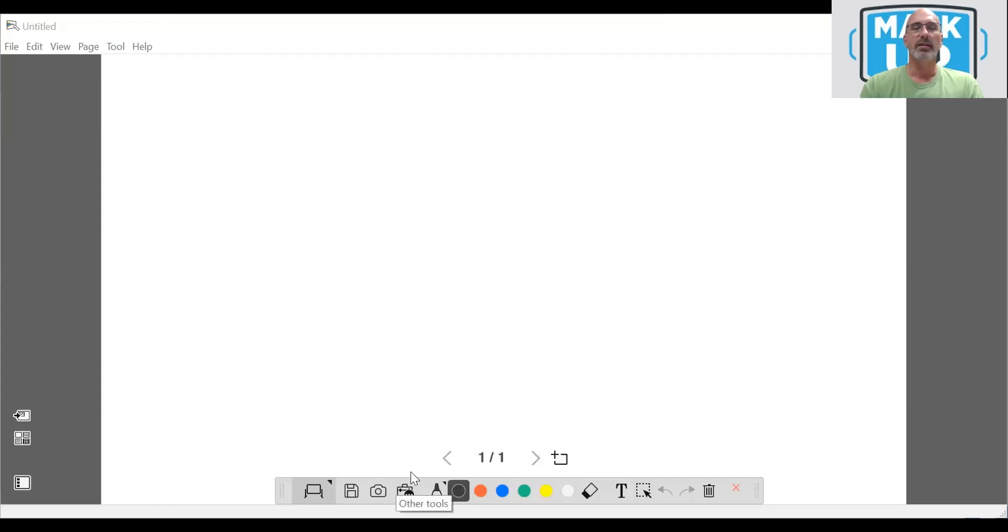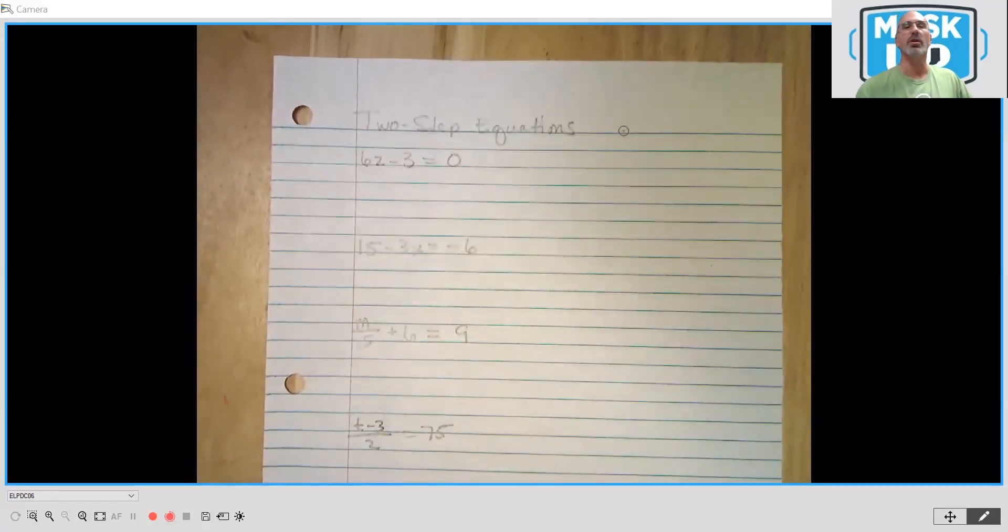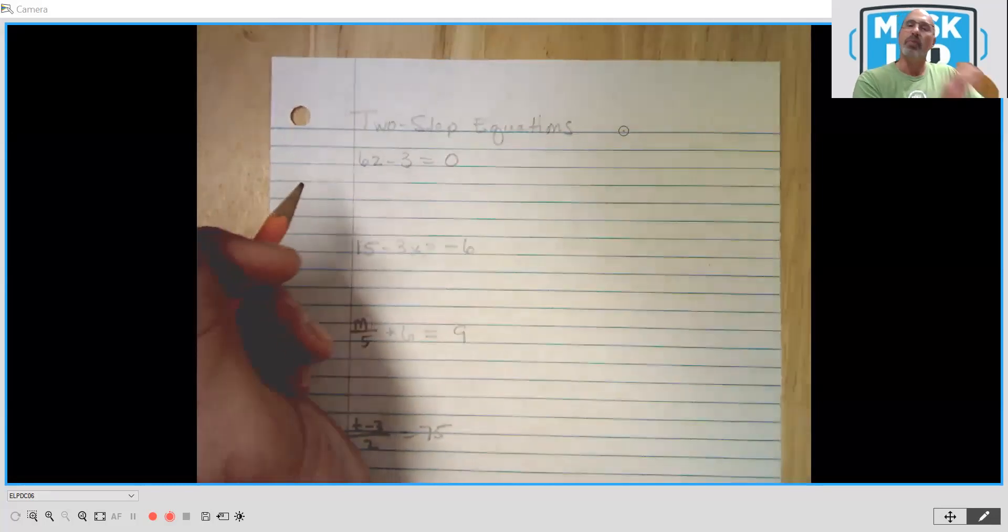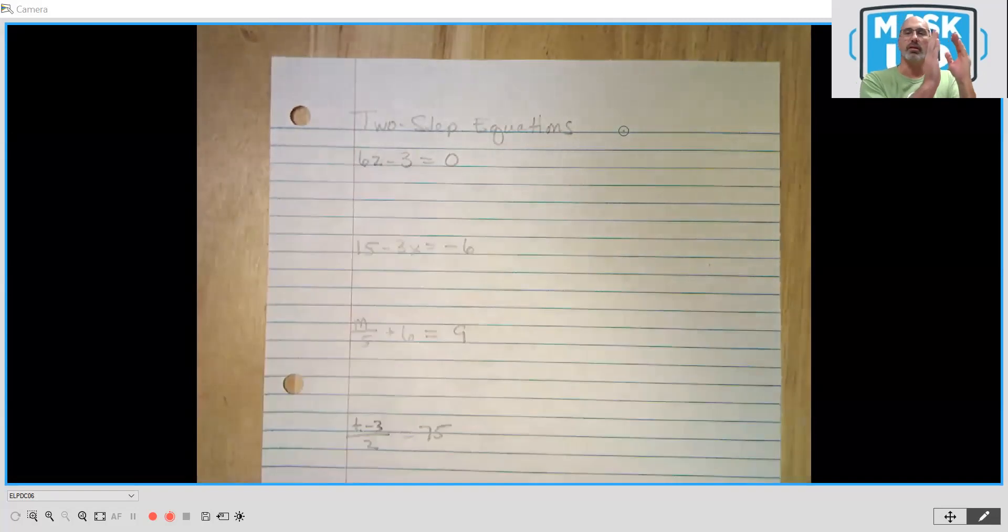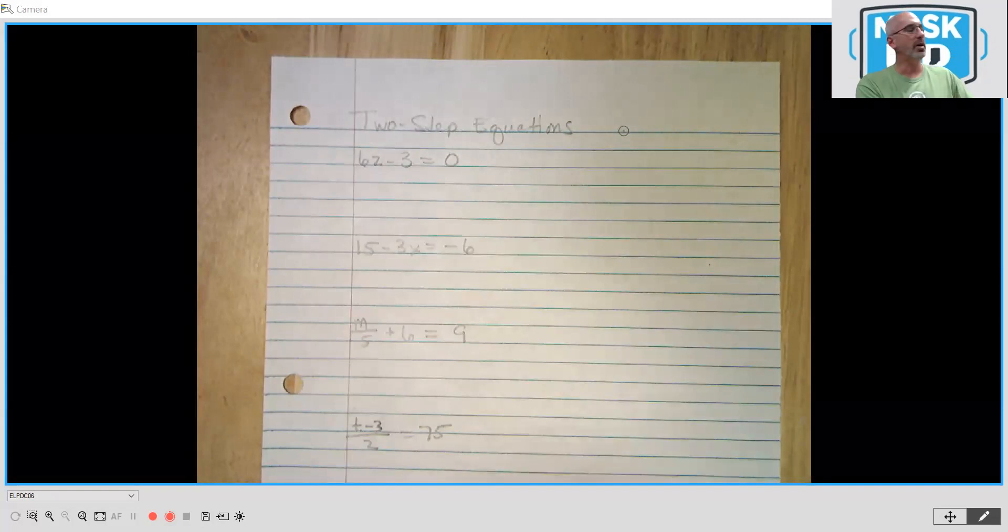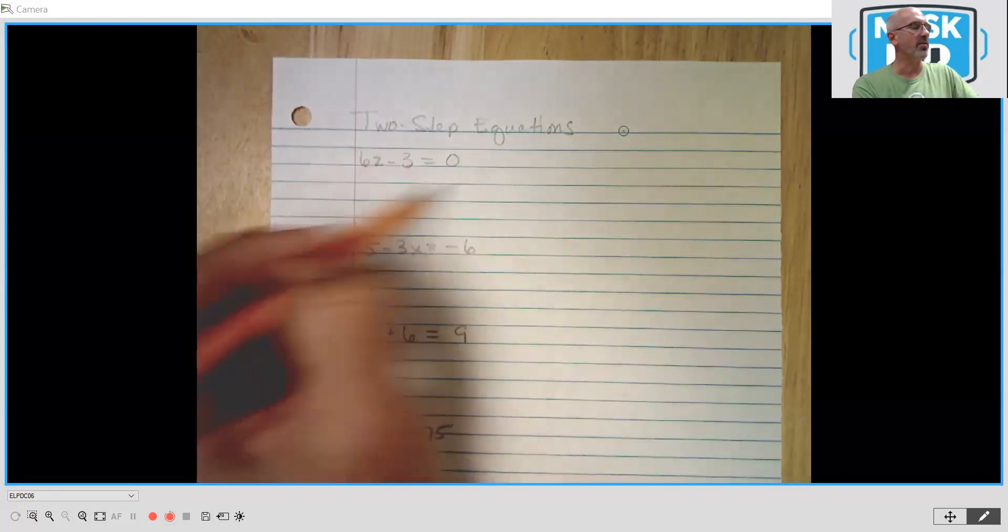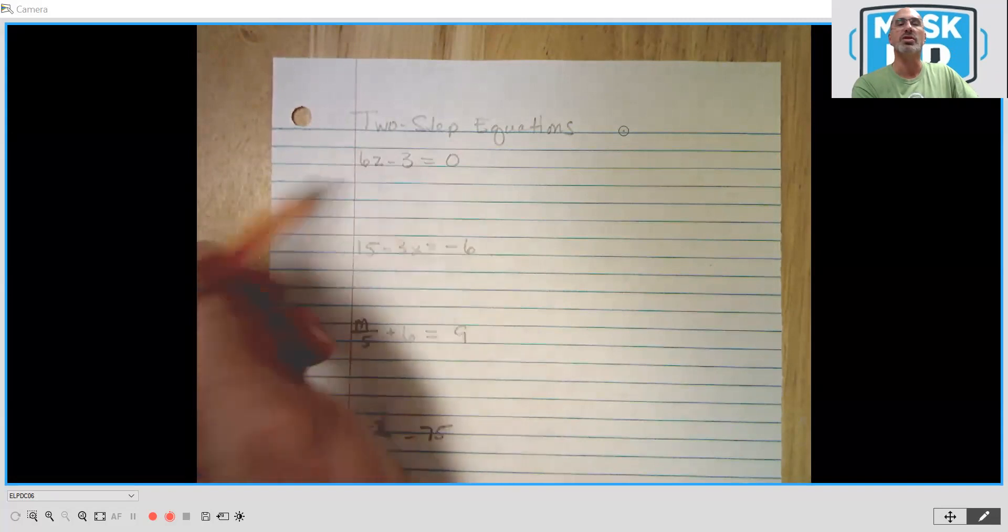So I am going to share my screen with you. Please be patient. All right. So we will be solving some two-step equations. Basically, what you're trying to do as with any algebraic equation is to get the variable, the letter on one side of the equal sign and everything else to the other side. It doesn't matter which side it is.